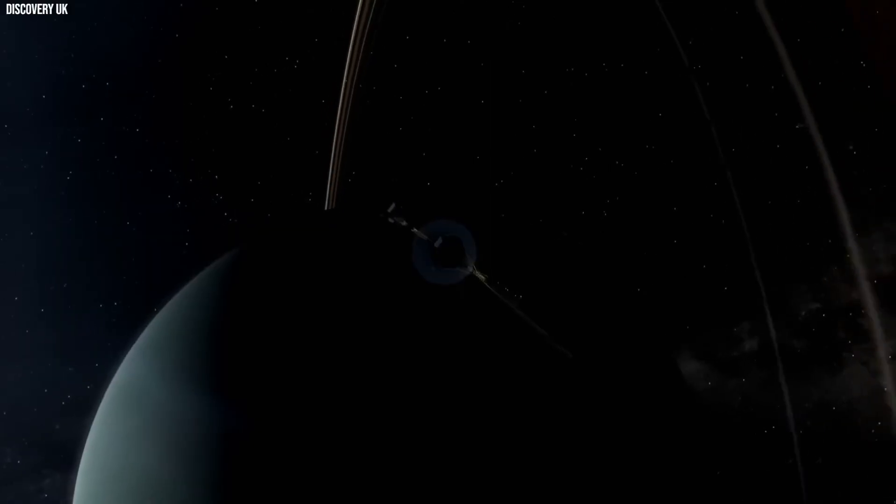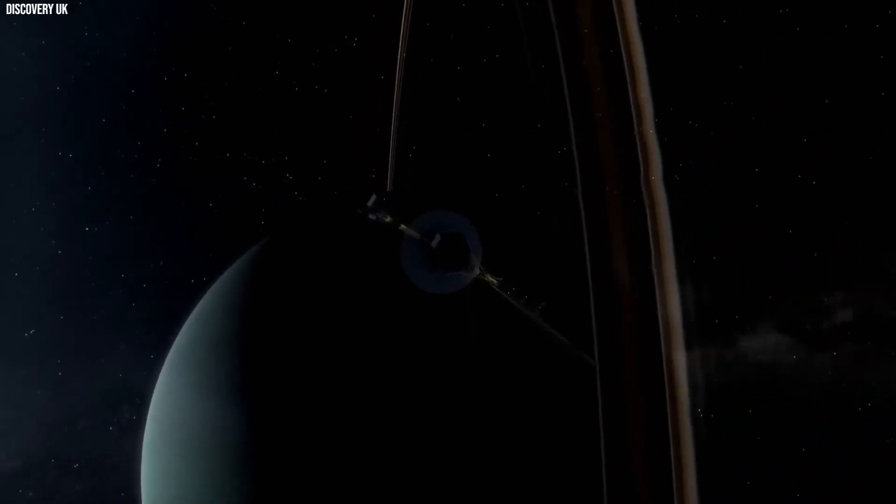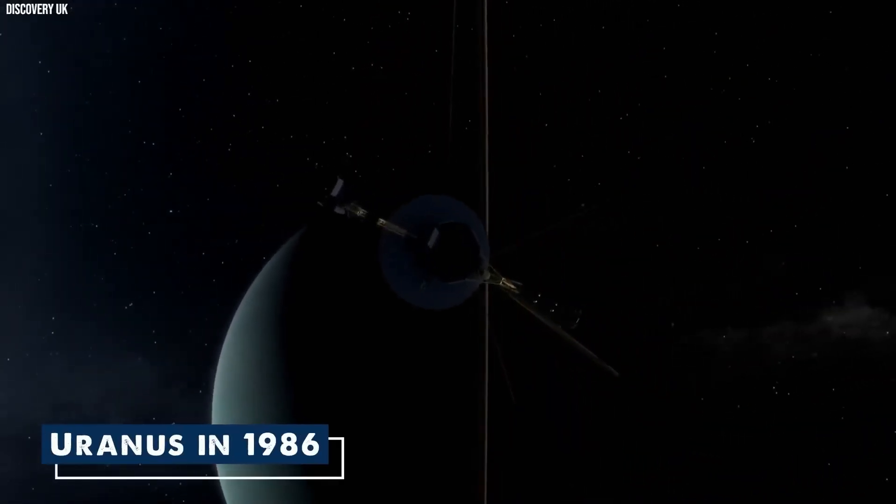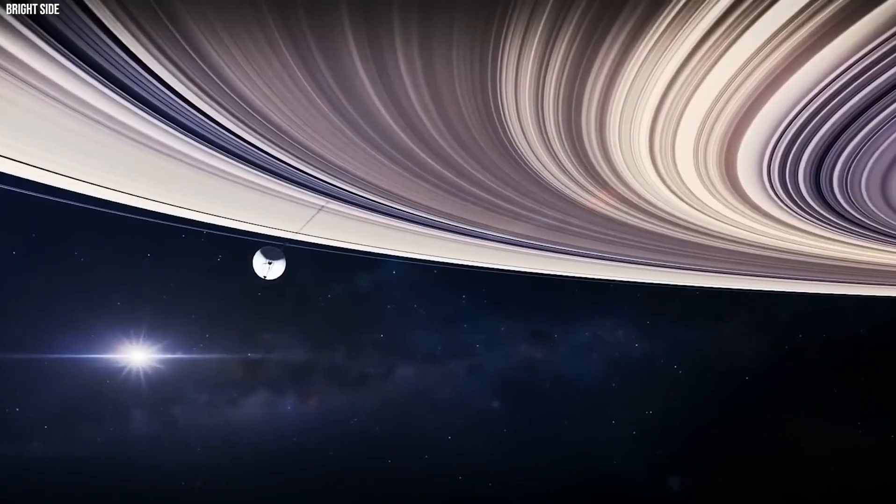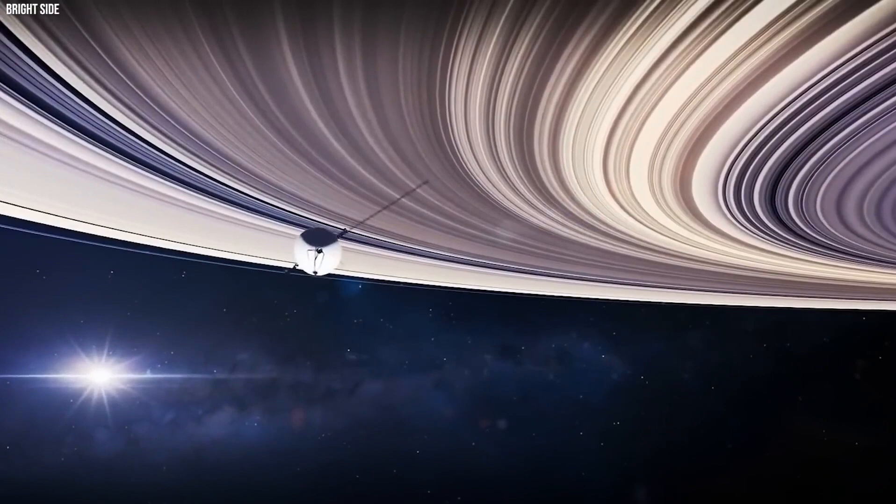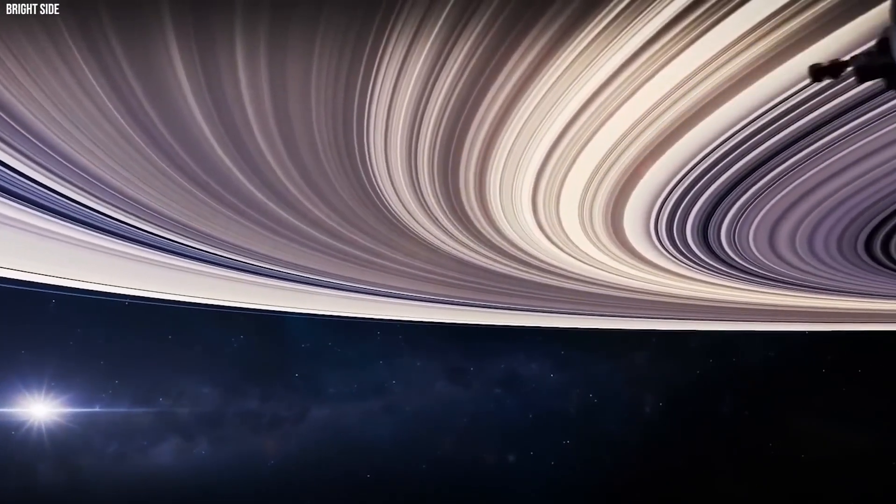Far beyond our solar system lies the enigmatic Oort cloud, a celestial gathering of comet-like entities bound together by the sun's gravitational pull, stretching halfway towards the nearest star. It remains a distant realm that the Voyagers are slowly but steadily making their way towards. However, interstellar space, where the solar wind phenomena give way, is a more accessible frontier.